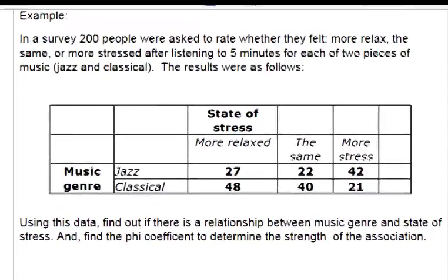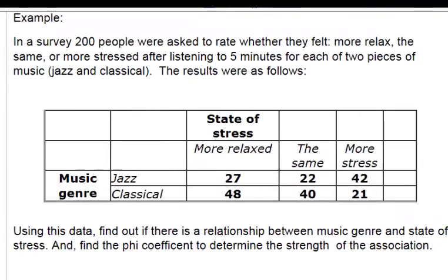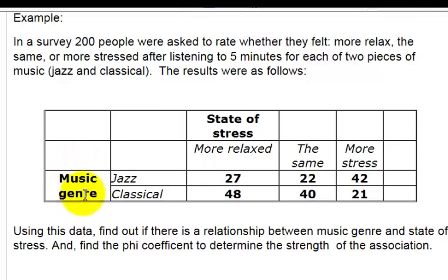We're going to do a chi-squared on two categorical variables. The first categorical variable is stress, with three levels: relaxed, the same, and more stressed. The second categorical variable is music genre, and it's either jazz or classical.